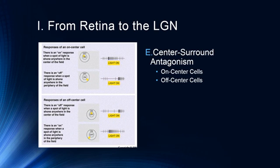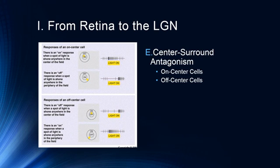Why is this important? This is one of the ways we're able to discern contrast. If we shine a light over the entire receptive field, the firing rate will not change because we're both exciting and inhibiting the neuron at about the same rate. But if a neighboring neuron has a differential firing rate, we know that's where a stimulus begins and ends. This is how we're able to do things like see text on a page — through this center-surround antagonism mechanism, which codes for where things start and stop in our visual world.